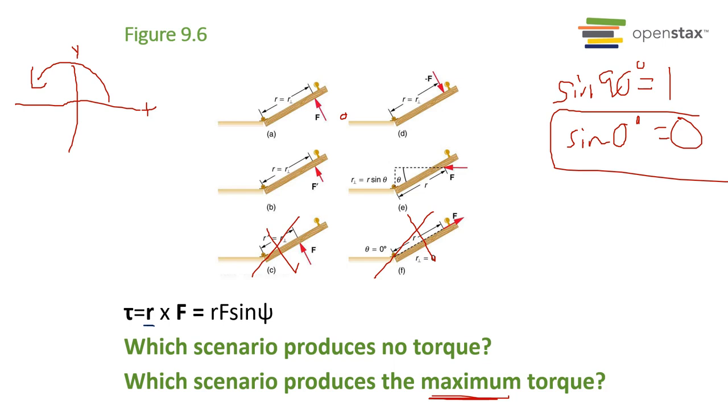c is the same force but small lever arm, which means that's out, that's not going to be a max. So we need maximum distance and a sine of theta of one. So we're left with, well, e is out because look at this angle, this angle is less than 90, so that's out.